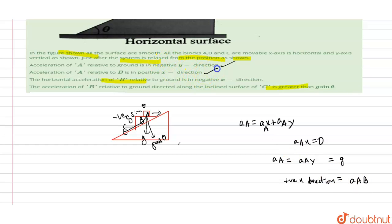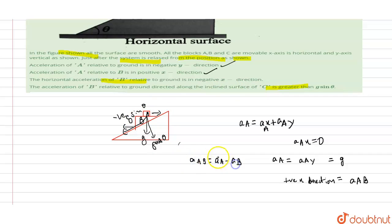So this is also correct. In the third statement, it is saying horizontal acceleration of B relative to the ground is in the negative x direction. This is also correct because AAB equals AA minus AB. If acceleration of A relative to B is in the positive x direction, then to counter this, AB must be in the negative x direction. So this statement is also correct.